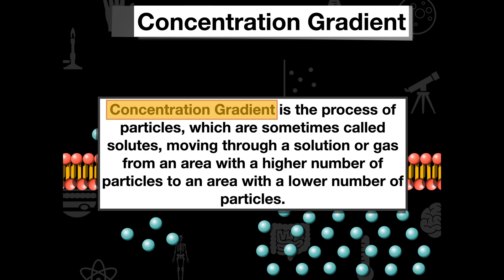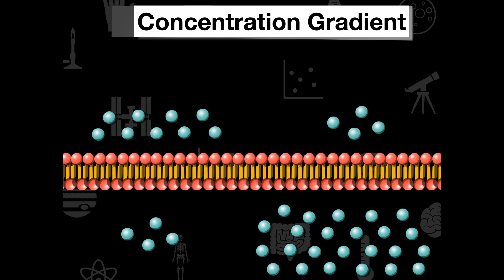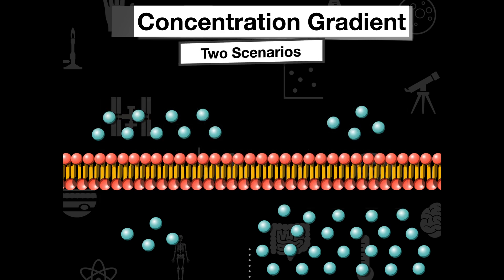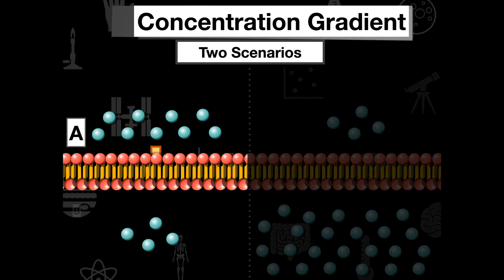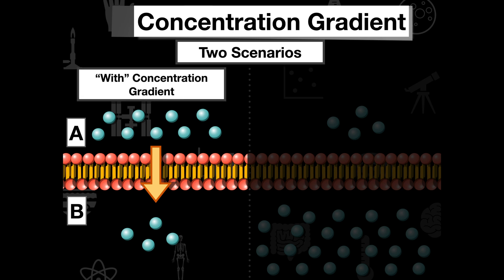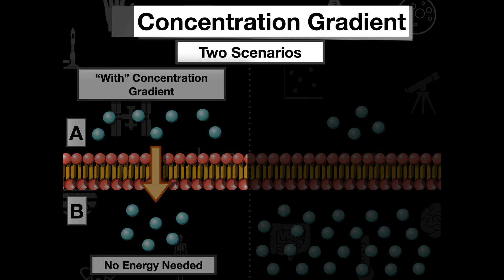If we look back on our examples, we want the particles to move from point A to point B. They are naturally going to diffuse because we have a higher number of particles in A — they're going to move with the concentration gradient. No energy is going to be needed and this is naturally going to happen.